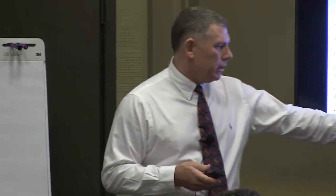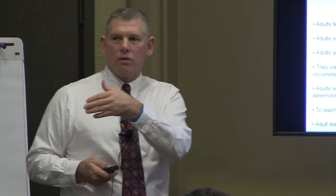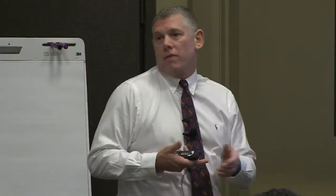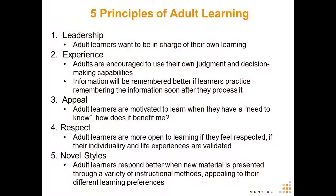Adult learning involves instructing for results. You have to develop an eight-week curriculum and think about what you want your fellows and residents to get out of it. The five principles of adult learning are: leadership, experience, appeal, respect, and novel styles. Adults want to lead their own training experience, use their own judgment, and learn better if they know they can apply it tomorrow.